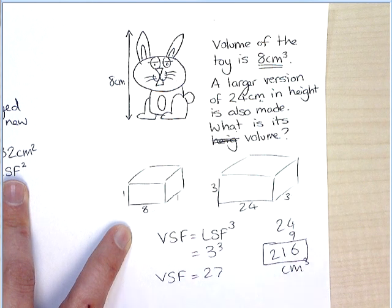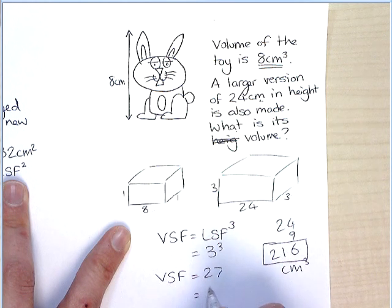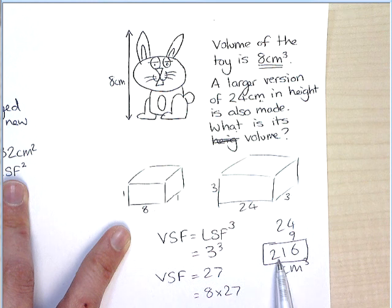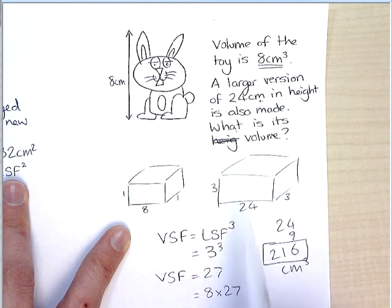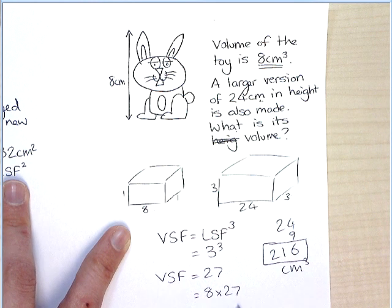So instead of doing the picture, I could have done the volume that I had before, 8 times 27. That would give you the same answer. I prefer pictures. If you prefer the formula, go for it.